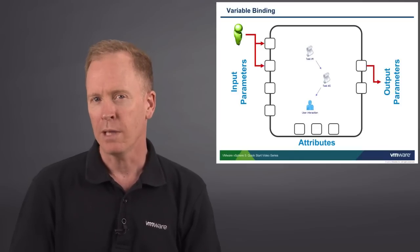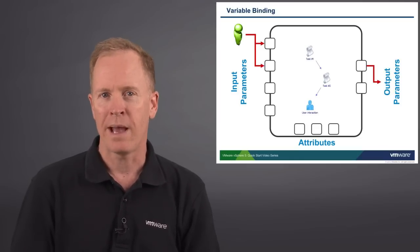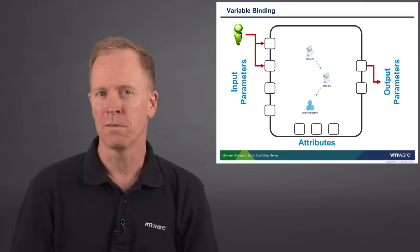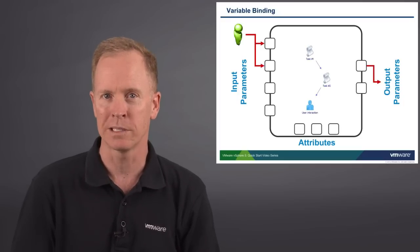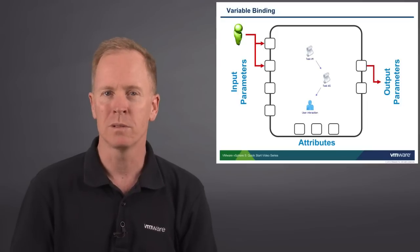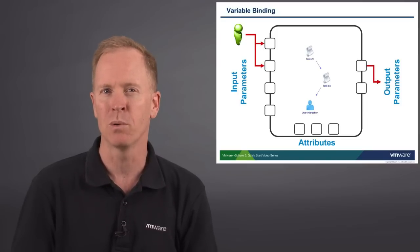Whereas input parameters and output parameters allow us to pass information into and out of a workflow, the third type of variable, attributes, aren't used for passing in or passing out information. Rather, attributes are variables that exist within the workflow itself. We'll talk about attributes in a few short moments, but let's start with input parameters.